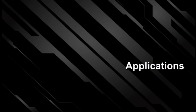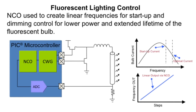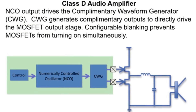Here are a few application ideas where the NCO would be useful. The NCO can significantly reduce the cost of implementing an efficient control mechanism for fluorescent lighting. For applications where a single tone needs to be generated, the NCO can generate the tone and then be internally connected to the complementary waveform generator module to directly drive a speaker.